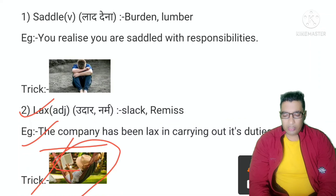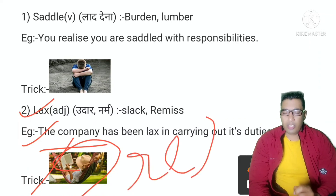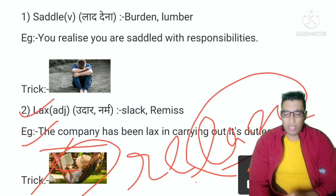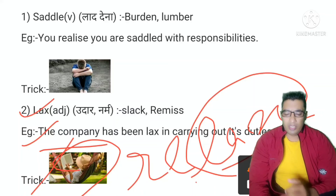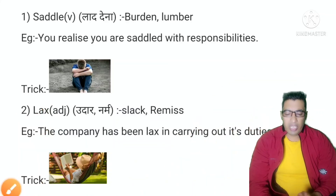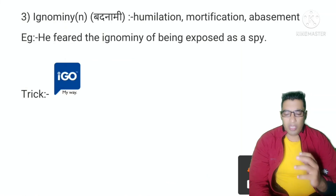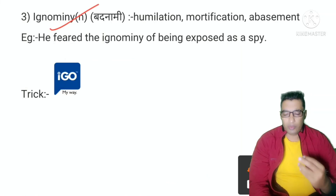And the third word is 'ignominy'. Ignominy is a noun. Its meaning is 'badnaami', humiliation, mortification, abasement. Example: 'He feared the ignominy of being exposed as a spy.' Toh spy ke roop mein usko darr tha ki uski badnaami na ho jaaye.